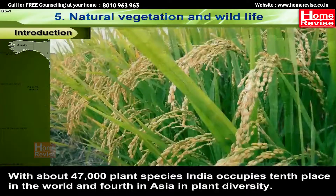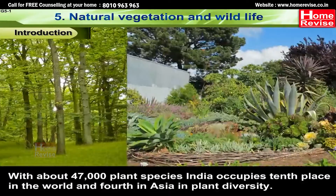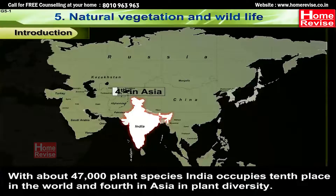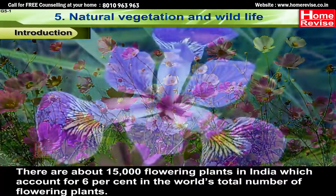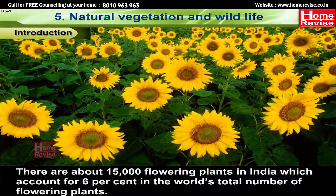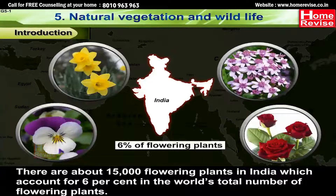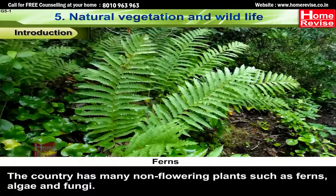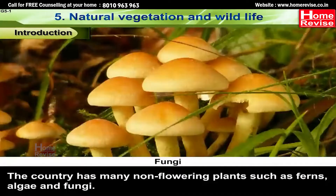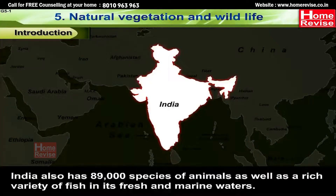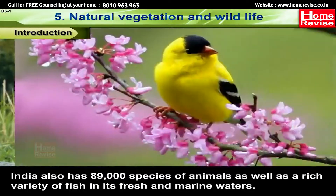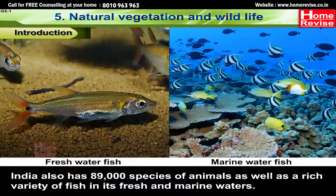India has about 47,000 plant species and occupies tenth place in the world and fourth in Asia in plant diversity. There are about 15,000 flowering plants in India, which account for six percent of the world's total number of flowering plants. The country also has many non-flowering plants such as ferns, algae, and fungi, and about 89,000 species of animals, as well as a rich variety of fish in its fresh and marine waters.